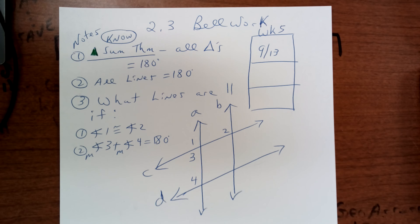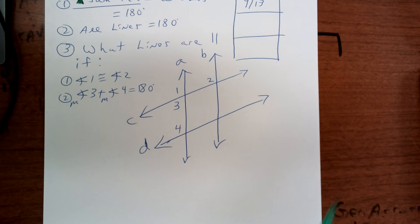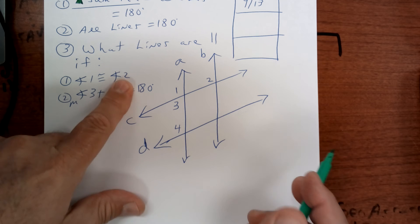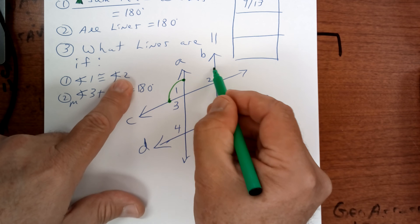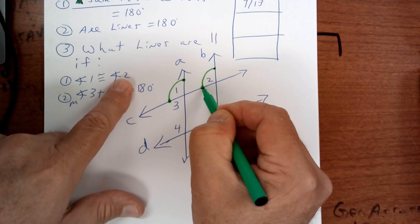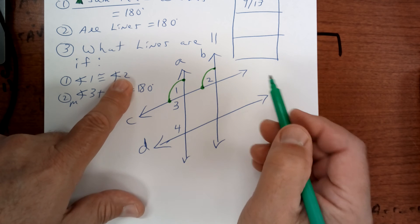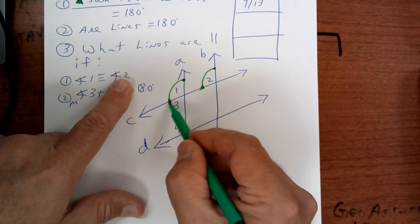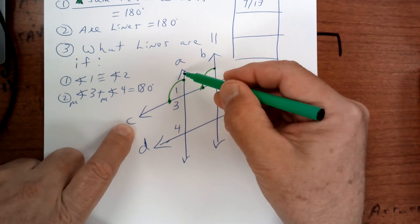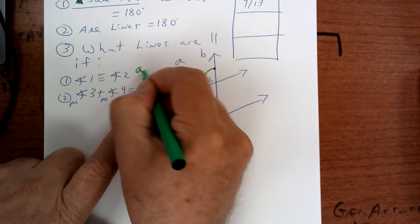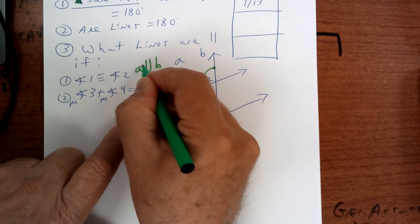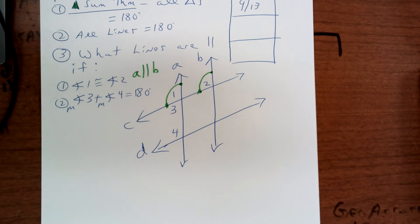It says what lines must be parallel if angle one is equal to angle two. Put dots on here. This one has two dots, so C is a transversal. This one has one dot, this one only has one dot, so A would be parallel to B. If it has one dot, those are the parallel ones.